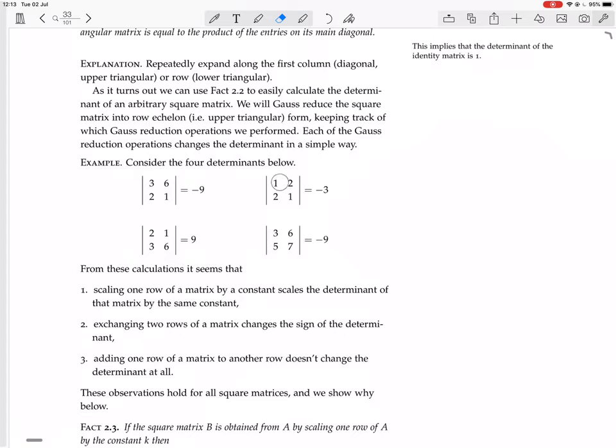Here we have divided row 1 by 3, and the determinant has also been divided by 3. And here we have added row 1 to row 2, so row 2 has become row 2 itself plus row 1, and the determinant has not changed.